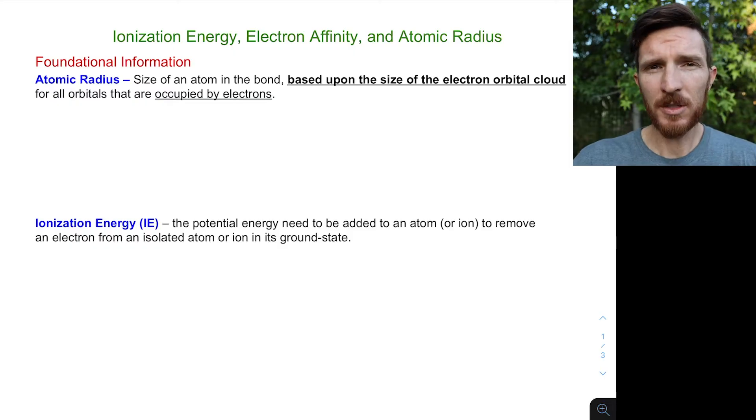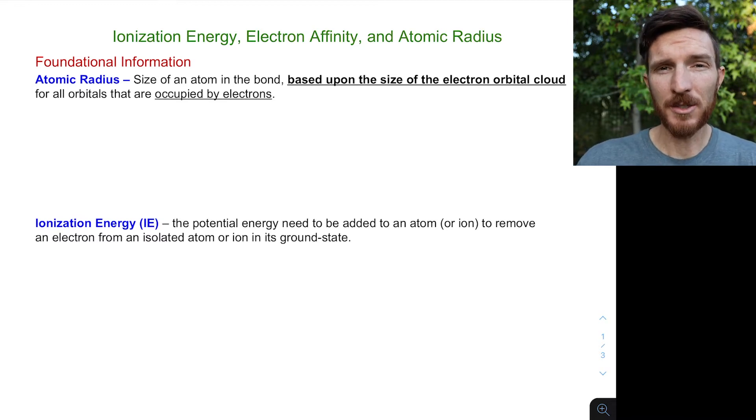In this video we're going to look at electron configurations and how they connect back to ionization energy, atomic radius, and electron affinity. We're going to define each of these things and then look at how they relate to where an electron is and how that corresponds to the energy needed to remove or add an electron, or how that relates to the size of an atom.